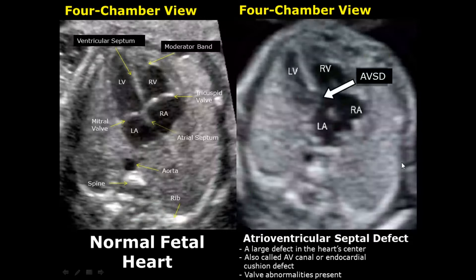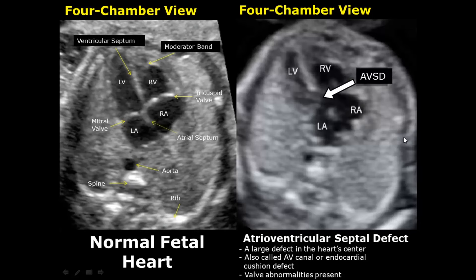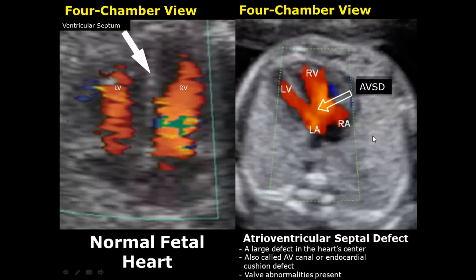An atrioventricular septal defect will have a large defect in the center of the heart. It is also known as AV canal or endocardial cushion defect. Because this defect is present at the level of the valves, there will be valve abnormalities present. On color Doppler, we can see the defect at the center of the heart.